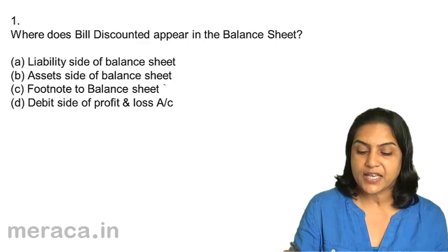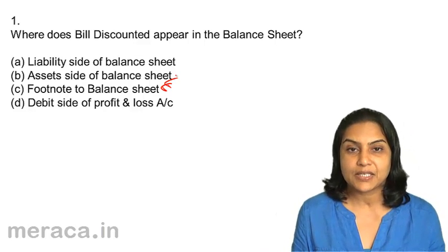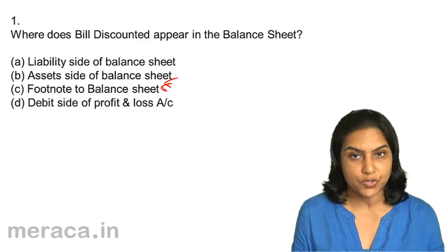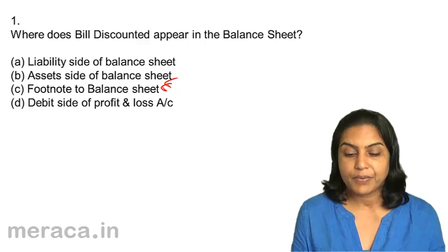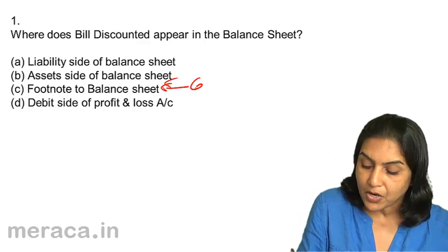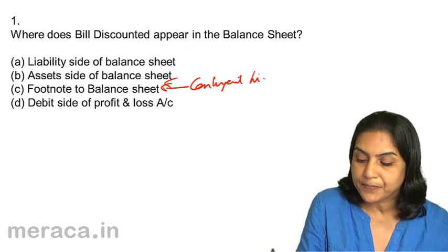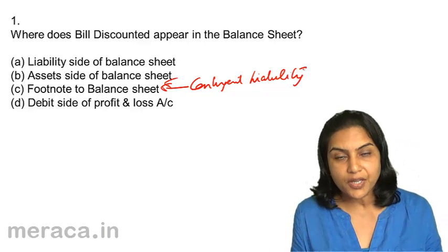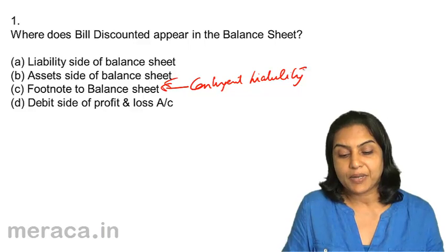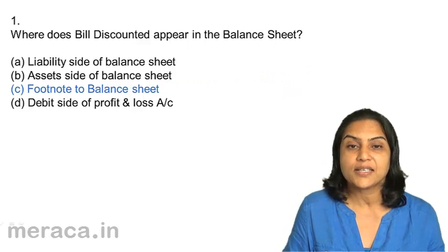Bill discounted appears as a footnote to the balance sheet. Once the bill is discounted, there is no bill receivable account in our books. Bill discounted is only shown as a footnote to the balance sheet because it is a contingent liability. In the event of a dishonour, we might have a liability to pay back. Therefore, answer 1C.